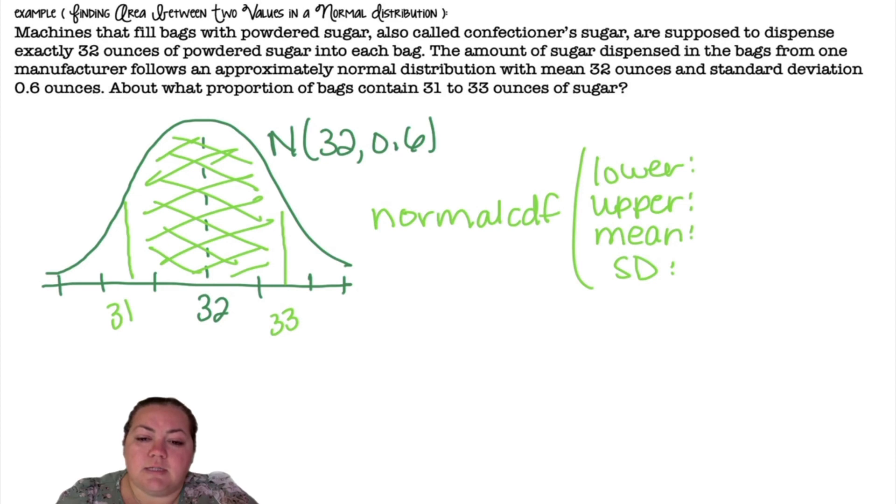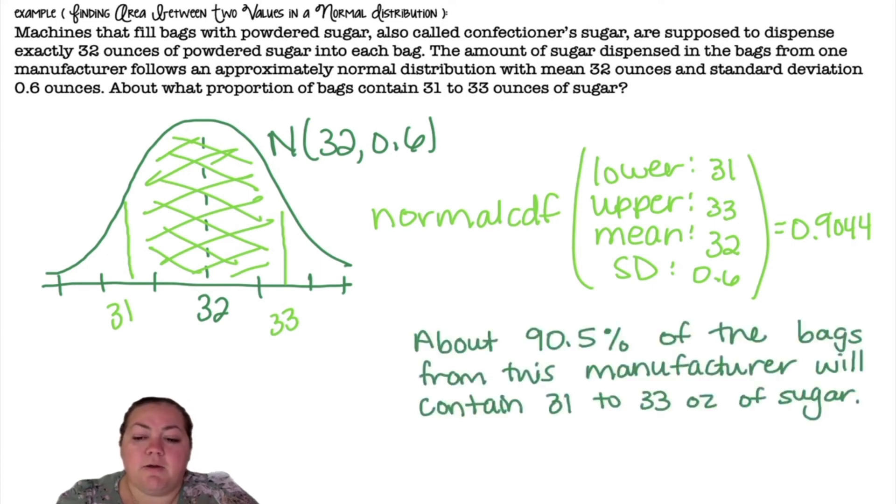Normal CDF. This time my lower bound is going to be 31. My upper bound is going to be 33. My mean is 32 and my standard deviation is 0.6, and we get 0.9044. If you were going to use the table method, you have to find the z-score for both 31 and 33, find the area to the left of those, and then subtract those areas from each other. So about 90.5 percent of the bags from this manufacturer will contain 31 to 33 ounces of sugar.